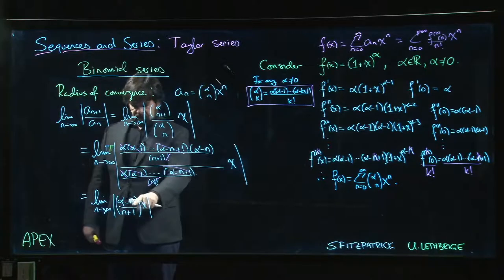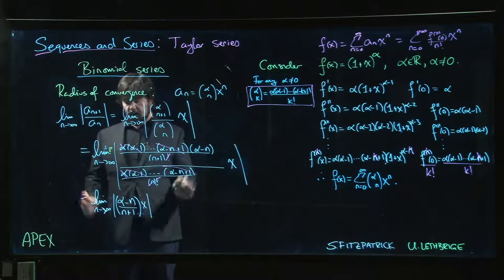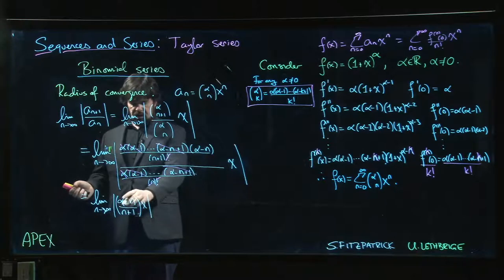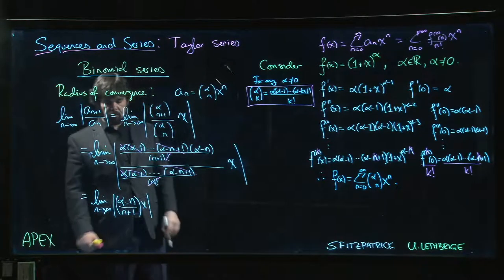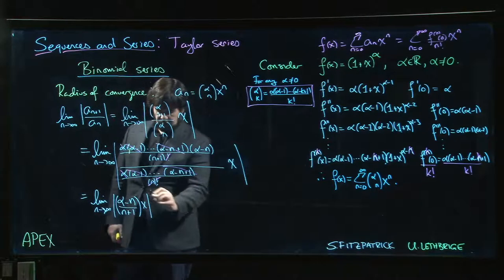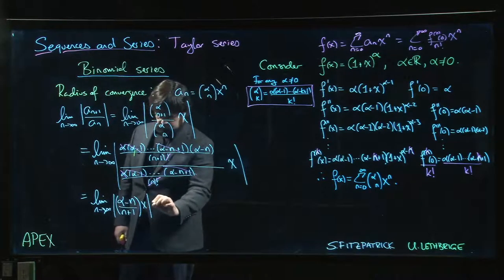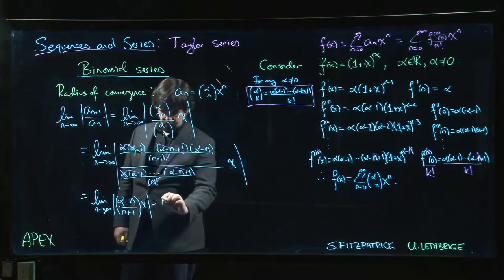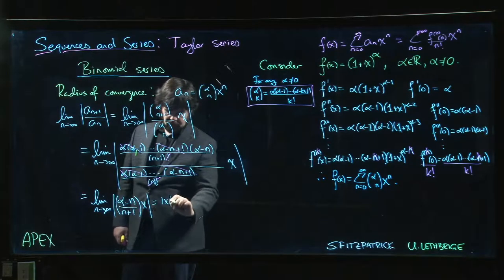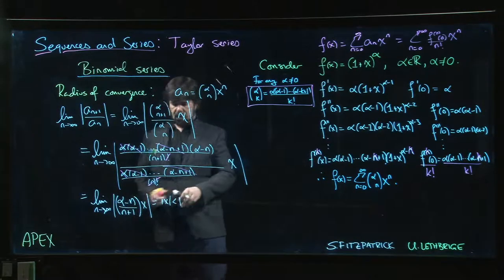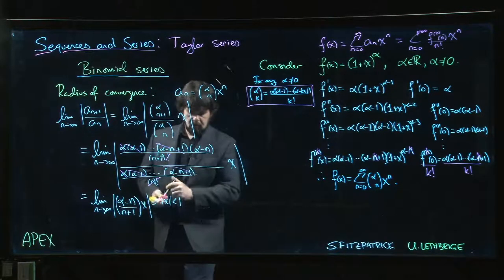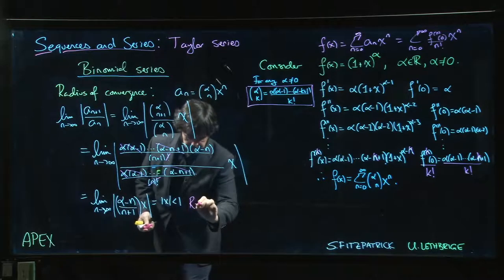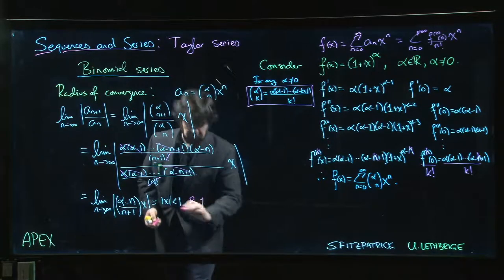So n is going to infinity. We have minus n over n. Alpha is a constant, so this in the limit is just going to go to minus 1. The absolute value of minus x is the same thing as the absolute value of x. So we just get absolute value of x. We need that to be less than 1, so that tells me that the radius of convergence in this case is going to be 1.